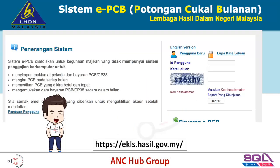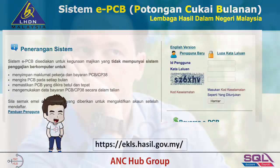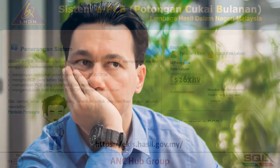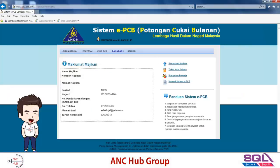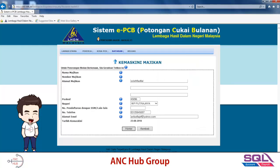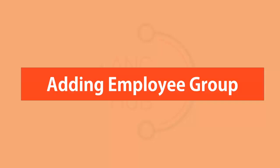Click 'Hantar'. Once completed, they will send you a confirmation email. You just need to verify the email and then you can start logging in with your ID and password. Once logged in, you can edit your employer information by pressing 'Kemaskini Majikan', change the details, and click send.